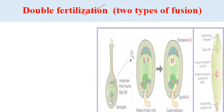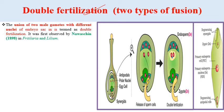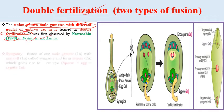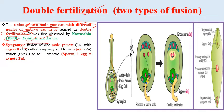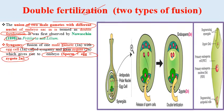The union of two male gametes with different nuclei of the embryo sac is termed double fertilization. It was first observed by Nawaschin in 1898 in the plants Fritillaria and Lilium. Syngamy is the fusion of one haploid male gamete with the egg cell, forming a diploid zygote which gives rise to the embryo. The zygote represents the first cell of the sporophytic generation.